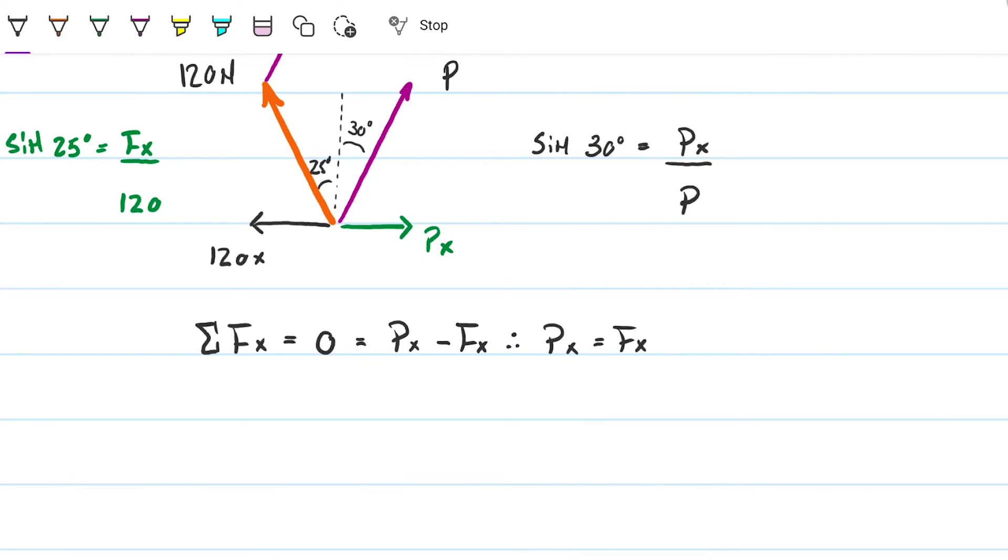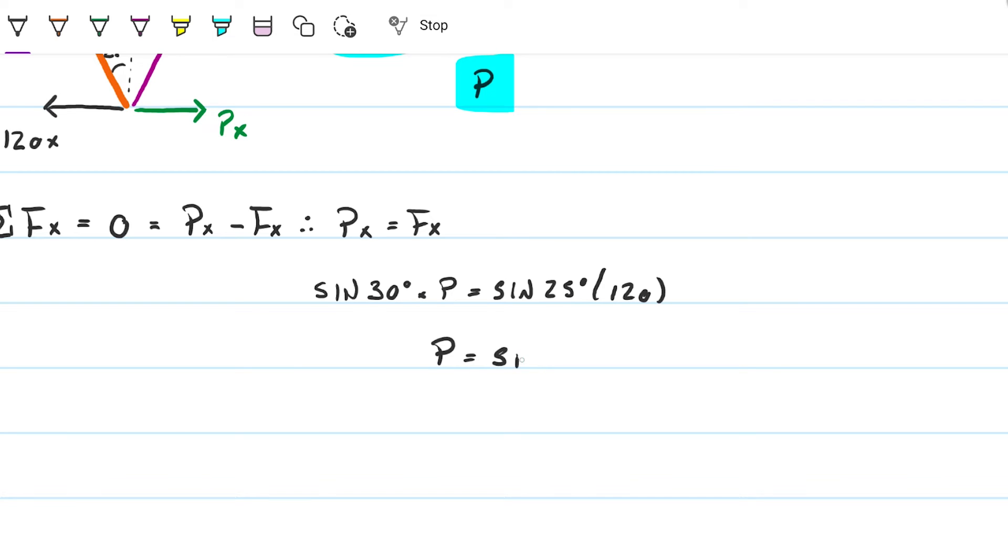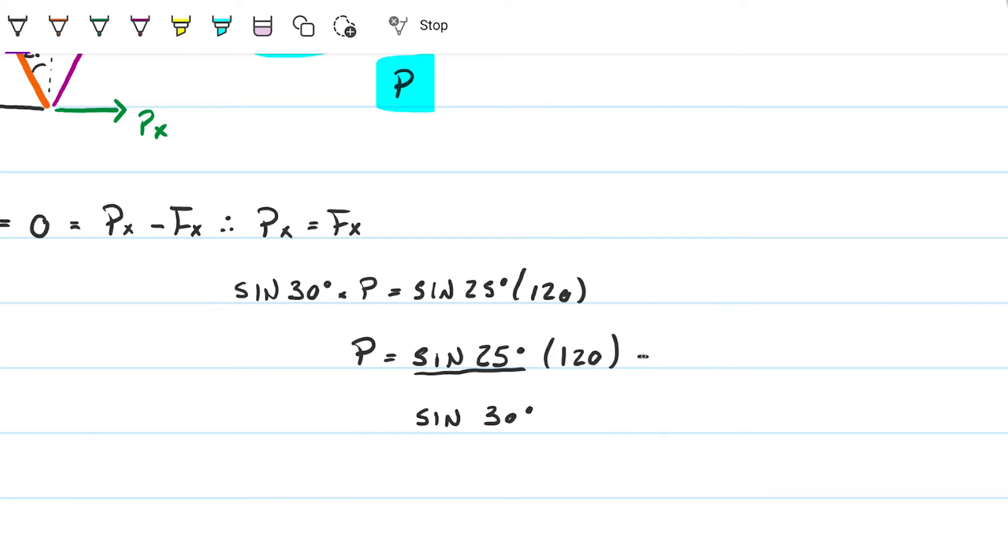And if that's true, then I can basically substitute the two equations here. I can substitute Px by sine of 30 times P, and I can substitute Fx by 120 times sine of 25. So I'm going to say the sine of 30 times P has to be equal to the sine of 25 times 120, which means that P is my only unknown here, and means that P is just the sine of 25 divided by the sine of 30 times 120 newtons. And obviously, the units is going to be the same units as the force 120, which is given in newtons. So this is also going to be newtons. And again, here, approximately 101.43 newtons.